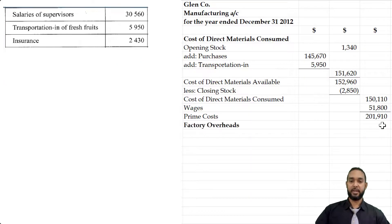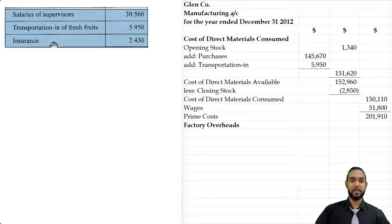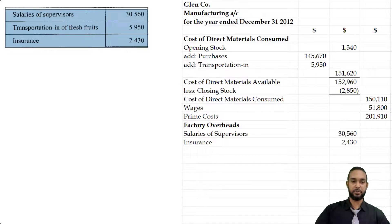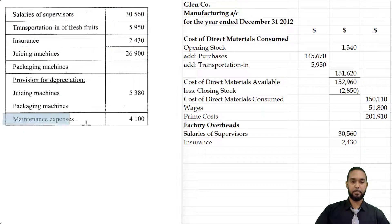Now let's move on to factory overheads. We have salaries of supervisors — the transportation in was dealt with as carriage in on raw materials — and insurance. Let's put those two items in. Then scrolling down, we have maintenance of $4,100.